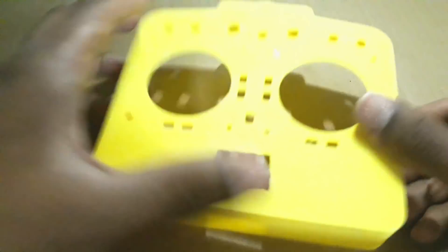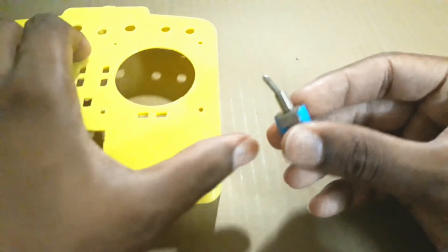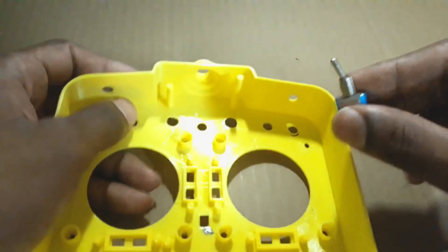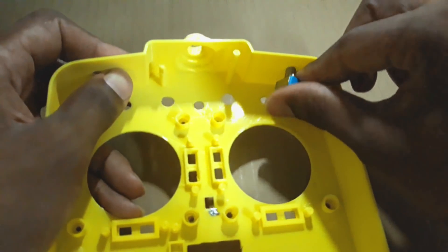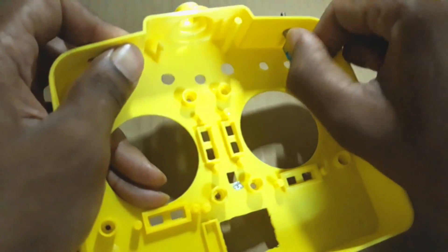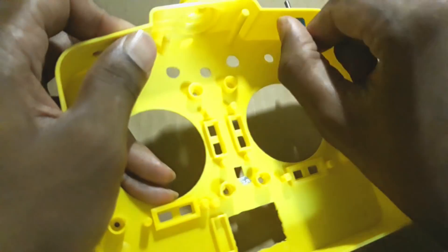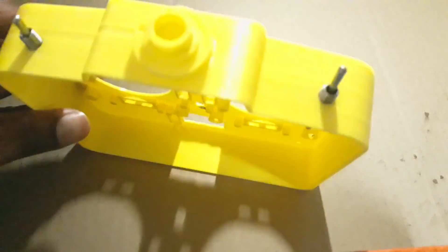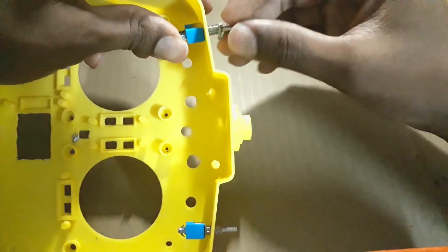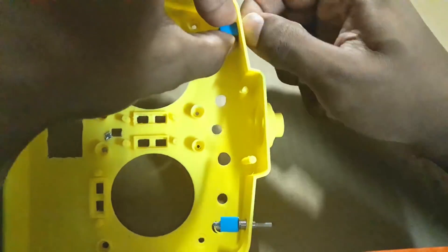So first of all, I will add the toggle switches in place. This is how it should be. And I have secured it using the bolt.